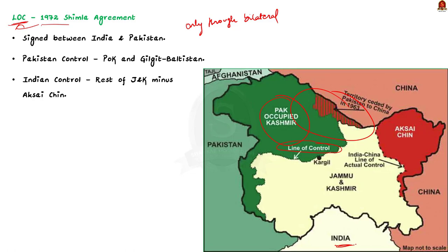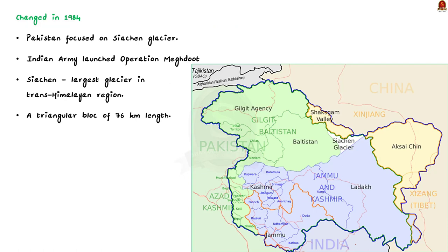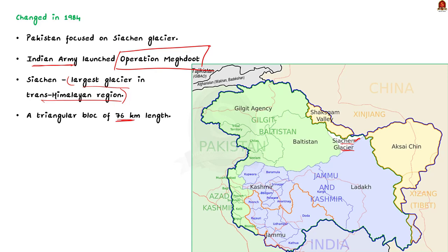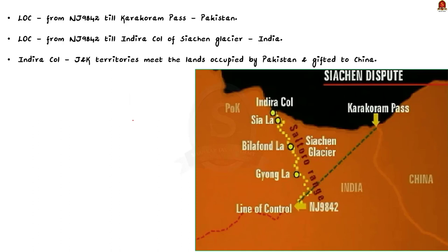The Line of Control was again changed in 1984, because the Siachen Glacier came into focus in the early 1970s. When Pakistanis learned of an Indian expedition to the Siachen Glacier, they moved aggressively to capture it — ordering a full range of mountaineering gear from a London-based firm, which was also a supplier to the Indian Army. So the information was leaked to India. The Indian Army then launched Operation Meghdood to turn Siachen into one of its bases. Siachen is the largest glacier in the Trans-Himalayan region — a triangular block of literally 76 km in length. Pakistan claims the Siachen Glacier belongs to the part of Jammu and Kashmir given to its control under both the Karachi Agreement and the Shimla Agreement.